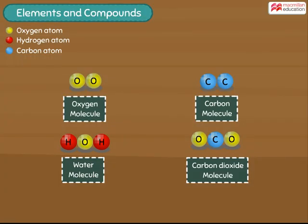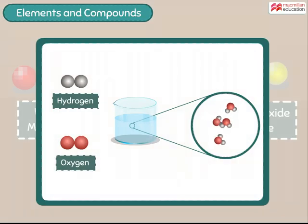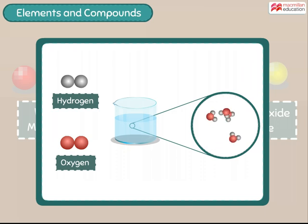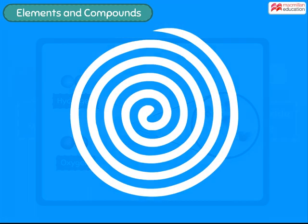But then, what about molecules like water and carbon dioxide? All such molecules that are made up of more than one type of atom are called compounds. The properties of a compound are different from the properties of the elements that make up the compound.